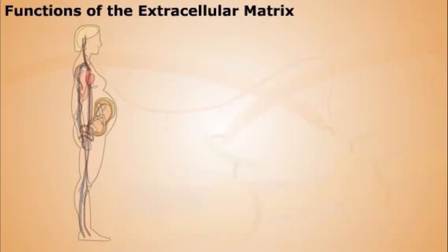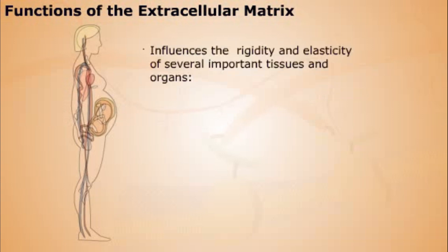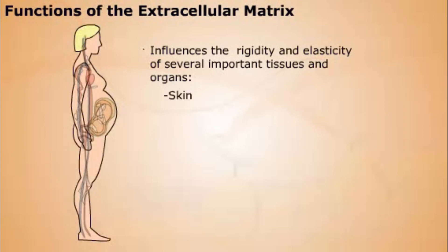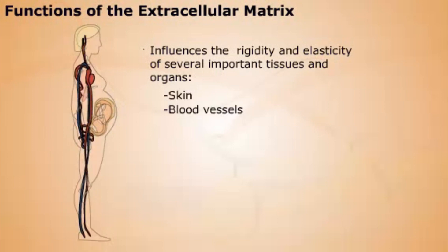The extracellular matrix plays several other important roles. The extracellular matrix influences the rigidity and elasticity of several important tissues and organs: skin, blood vessels, tendons, lungs, and other organs.